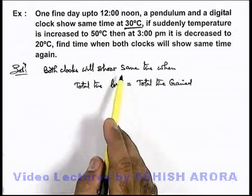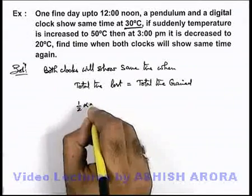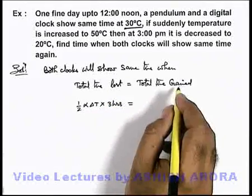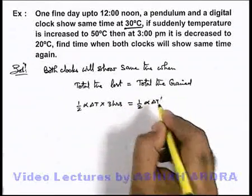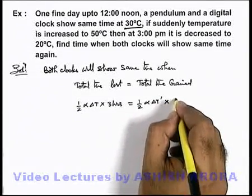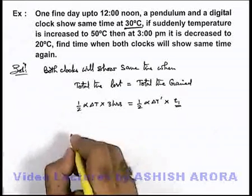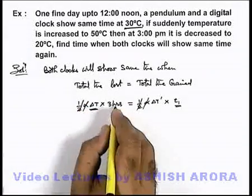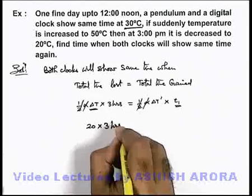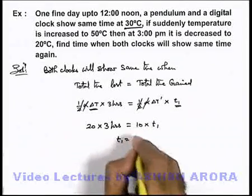From twelve noon to three pm, within three hours, total time lost can be calculated as half alpha times delta-t. Half alpha cancels out. When the temperature increased to fifty degrees, delta-t equals twenty, multiplied by three hours, is equal to delta-t-dash, which is thirty minus twenty — that is ten — multiplied by t1, where t1 is the number of hours after which total time gained equals total time lost. On solving, we get t1 equal to six hours.